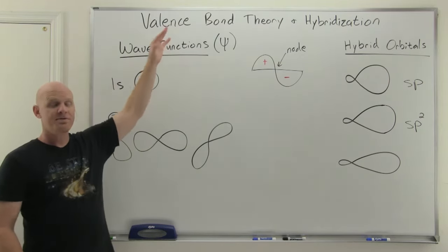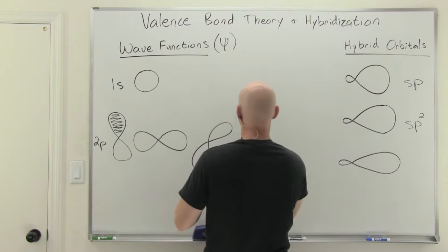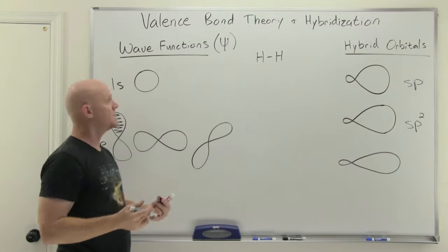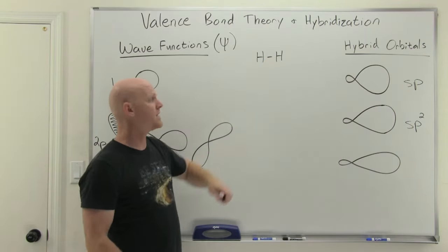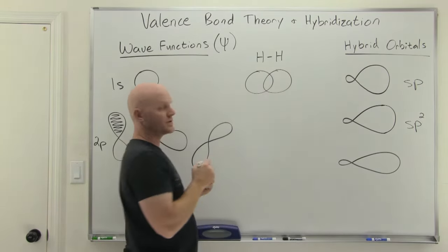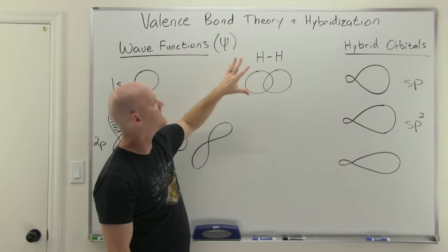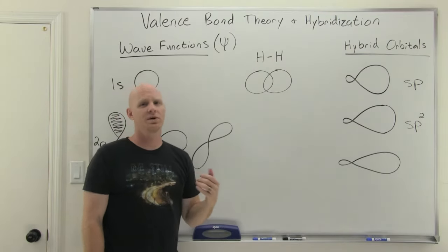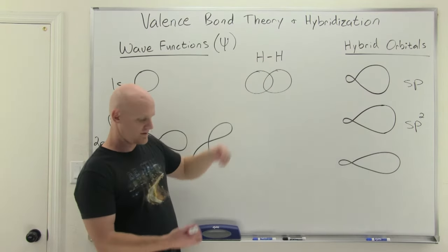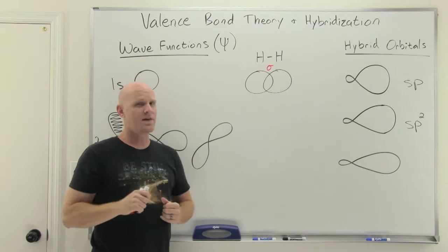The heart of valence bond theory is overlapping orbitals to create covalent bonds. Looking at a simple molecule of elemental hydrogen, H2 — that lovely line represents a covalent bond. Hydrogen's only electron is in an s orbital, and those s orbitals are going to come together and overlap. That's where the shared electrons are going to live — the ones described by that line representing the covalent bond. We call this sigma overlap.